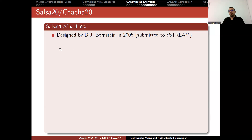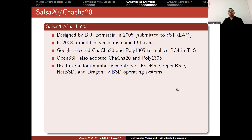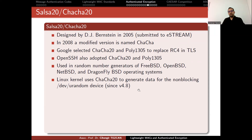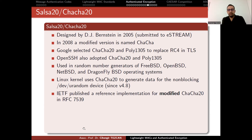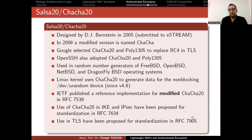ChaCha is a modified version of Salsa. These algorithms were designed by Bernstein in 2005 and submitted to eStream — it is a stream cipher. In 2008, a modified version was named ChaCha. Google selected ChaCha20-Poly1305 to replace RC4 in TLS. OpenSSH also adopted these algorithms. They are used in random number generators for operating systems such as FreeBSD and OpenBSD, and the Linux kernel uses ChaCha20 to generate data for the non-blocking /dev/urandom device. ChaCha20 has also been proposed for standardization in IKE/IPSec and is used in many VPN protocols.